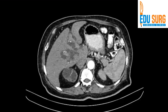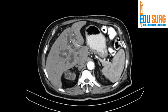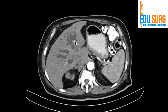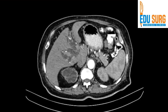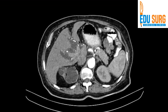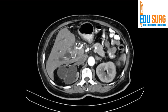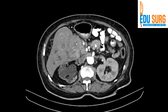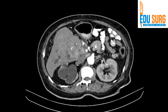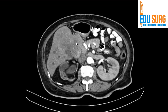This small branch to segment 4 appears to be free. This is the branch to segment 2 and 3, and this is the branch to segment 4 — both of these branches are free. So this patient can undergo a right hepatectomy because branches to segments 2, 3, and 4 are free, and the left portal vein is also free.